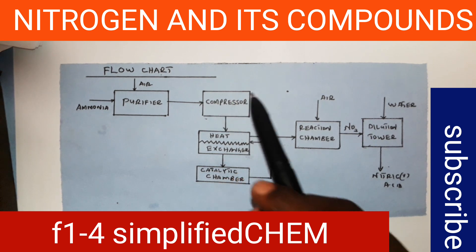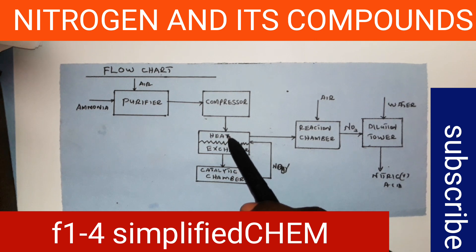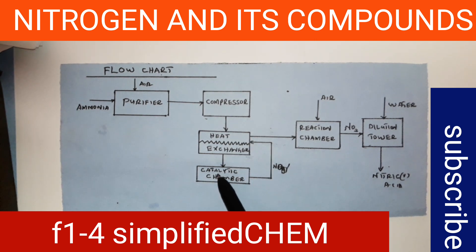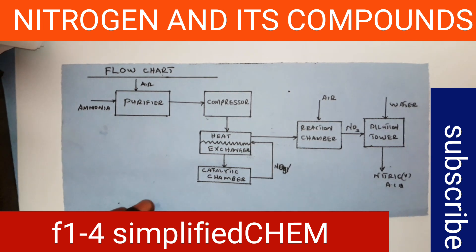After the compressor, the reactants are taken to the heat exchanger, whereby they are preheated so as to attain a suitable reaction temperature. After that, the mixture is again pumped into the catalytic chamber, whereby they are further heated to about 900 degrees Celsius and passed over heated platinum-rhodium catalyst, whereby ammonia is oxidized to nitrogen monoxide (NO) and water, as the reaction below shows.